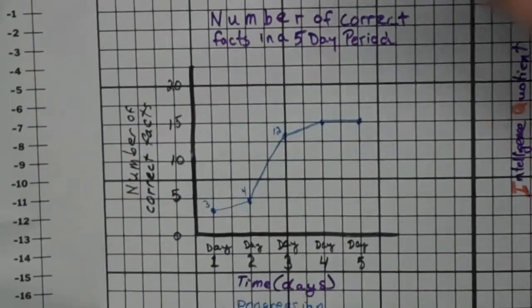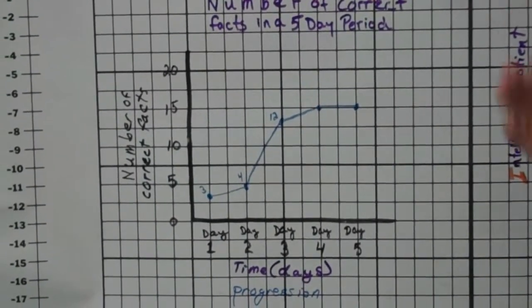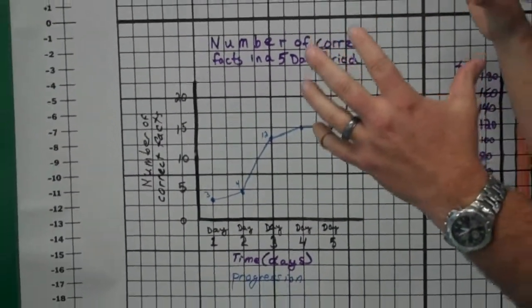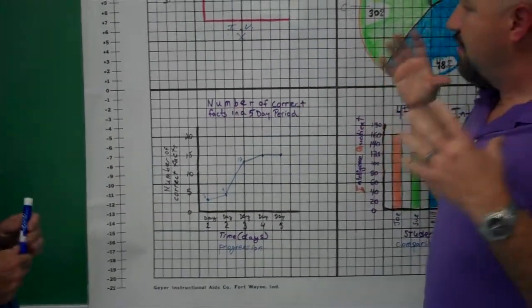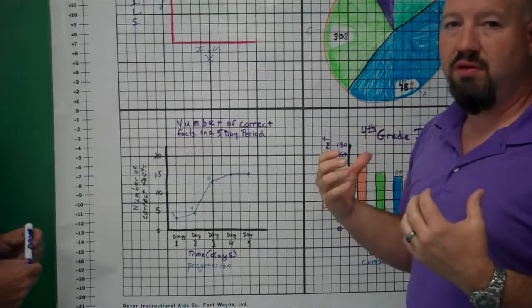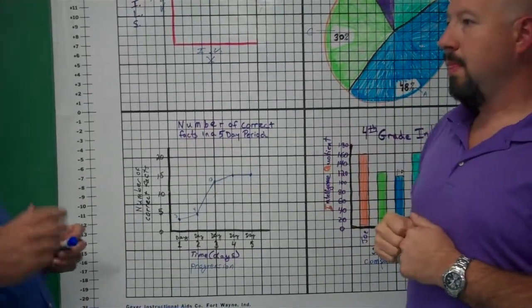You want to use as much of the graph as possible. Because by spreading it out and really showing that change, now your graph really has purpose and it is meaningful. Because you can make sense of it all.